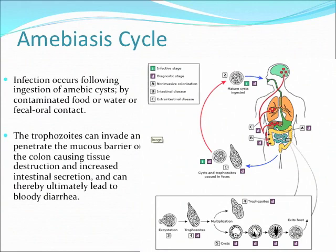Once in the colon, you develop the trophozoites. The trophozoites can go to the liver causing liver abscesses, can stay in the colon causing dysentery, or can stay there without causing any problems. It can also go to the lungs through direct contact through the pleura, can go to the heart, and, very rarely, it can go to the brain through the blood.